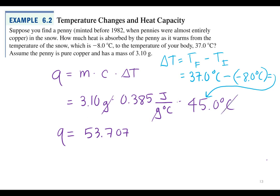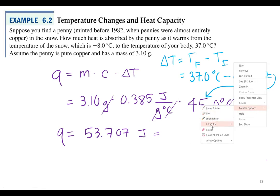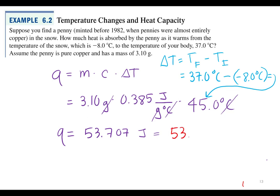Grams cancel out. Degrees Celsius cancel out. So that's joules. But what else should we think about when we're reporting our final answer? Sig figs. Good old sig figs back from Gen Chem 1 to save the day. How many sig figs should we have? Three. So what should we go with? 53.7 joules.